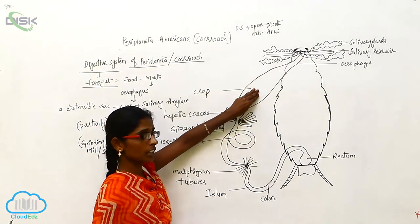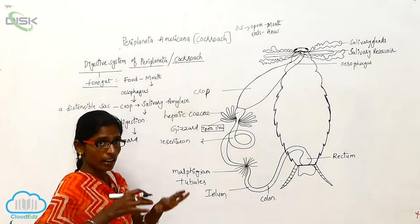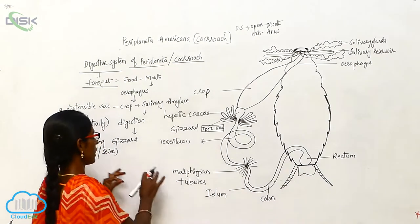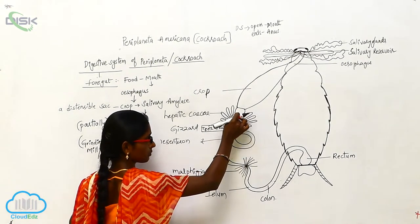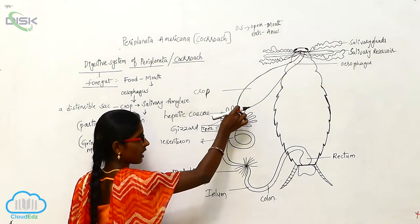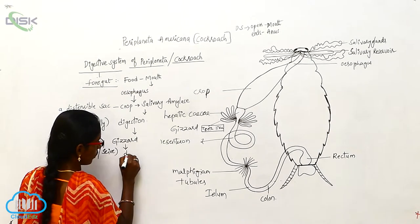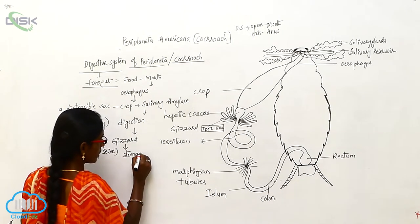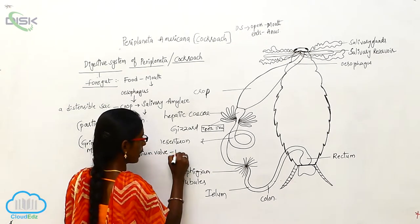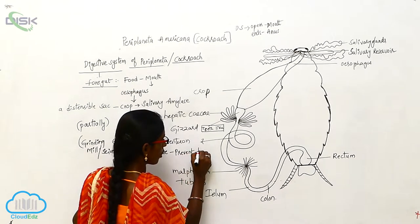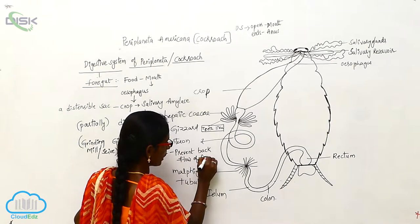From the crop wall the partially digested food material enters into the gizzard. In the gizzard the food material is fully digested. The gizzard acts like a sieve and has the stomadium valve. The stomadium valve prevents the backflow of food material.